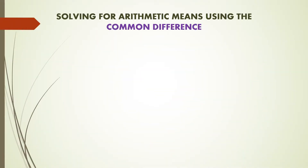In a previous lesson, I mentioned that if you have the common difference of an arithmetic sequence, you can easily find the terms of that sequence. So we can make use of the common difference to find the two missing arithmetic means between 4 and 28.